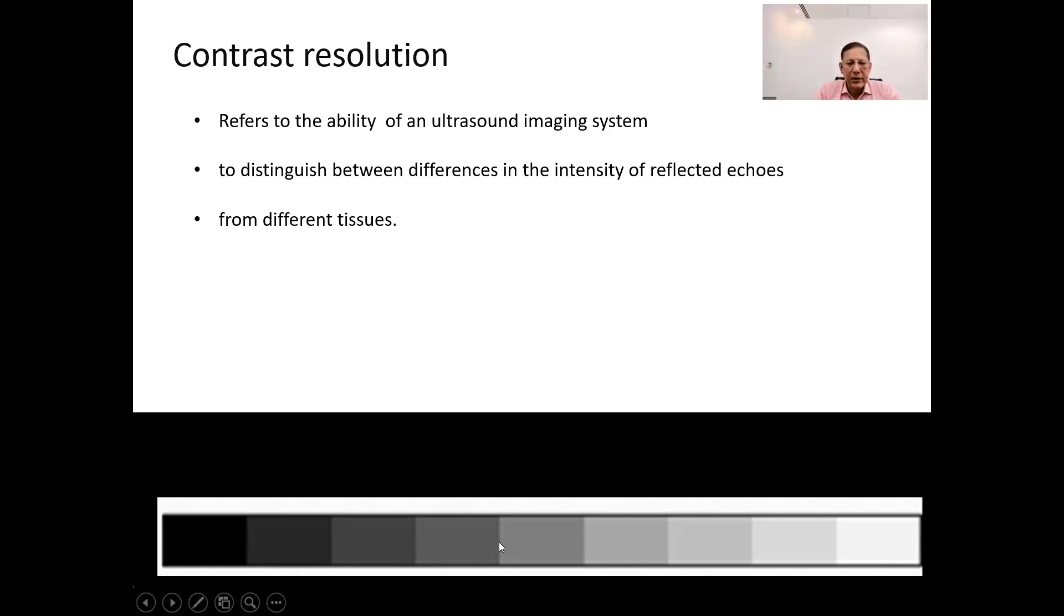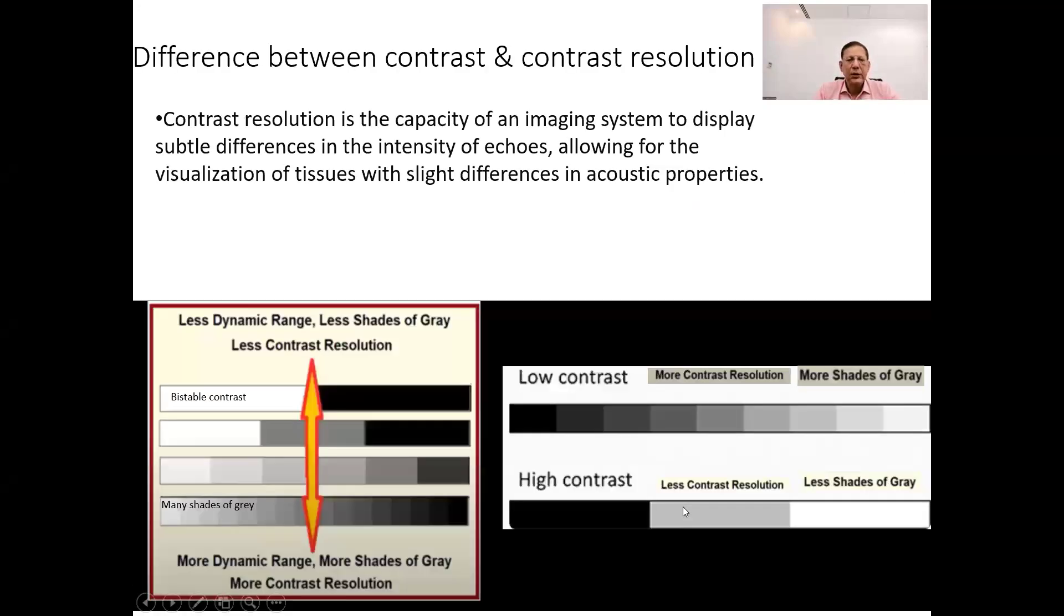The system processes these echoes and assigns different shades of gray to the image corresponding to the intensity of the echoes. It is very important to know that contrast of an image and contrast resolution of an image are two different things.